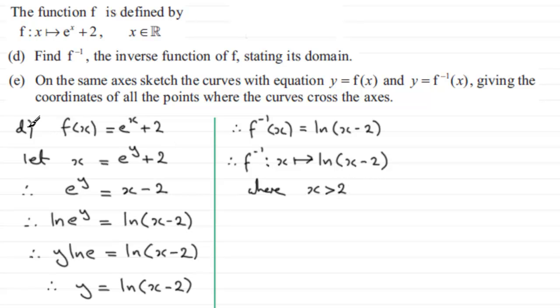There you have it, part d to this question. Now for the last part, we're told that on the same axis sketch the curves with equation y equals f of x and y equals f to the minus one of x, giving the coordinates of all points where the curves cross the axis. To do this, let's start by sketching the graph y equals f of x.